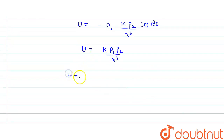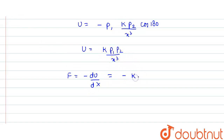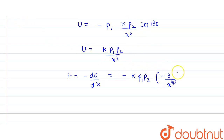The force of interaction is F = -dU/dx. There is no need for partial differentiation since it is just a function of x. Taking the constant term kp1p2 outside, the differentiation of 1/x³ gives -3/x⁴.